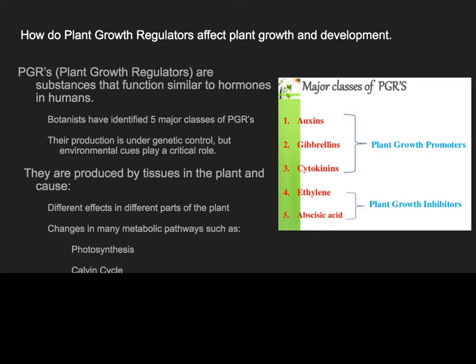Botanists — scientists who study plants — have identified these PGRs. Their production is under genetic control, but environmental cues play a critical role. Plants can produce these growth regulators themselves, and we as humans can also manufacture them and spray them onto plants. So the genetics behind it is just as important as the environmental cues.